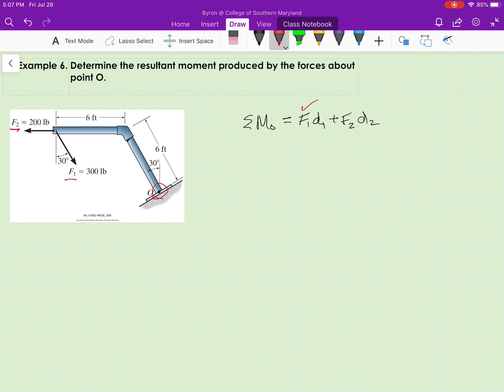We know F sub 1 and F sub 2, those magnitudes are given. So we need to find D1 and D2. Let's look at D1 first. D1 is the perpendicular distance from the line of action of F sub 1.